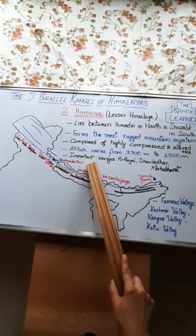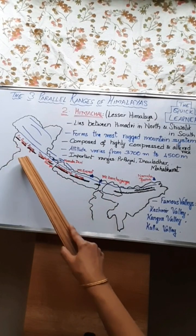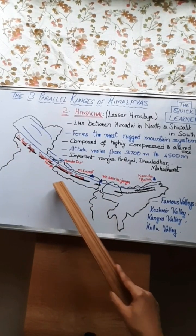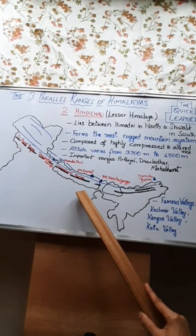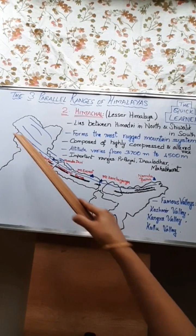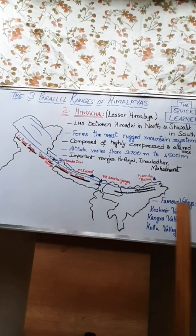The important ranges here are the Pirpanjal range, Dholadhar range, and Mahabharat range, wherein the Pirpanjal range is the most prominent and longest one.